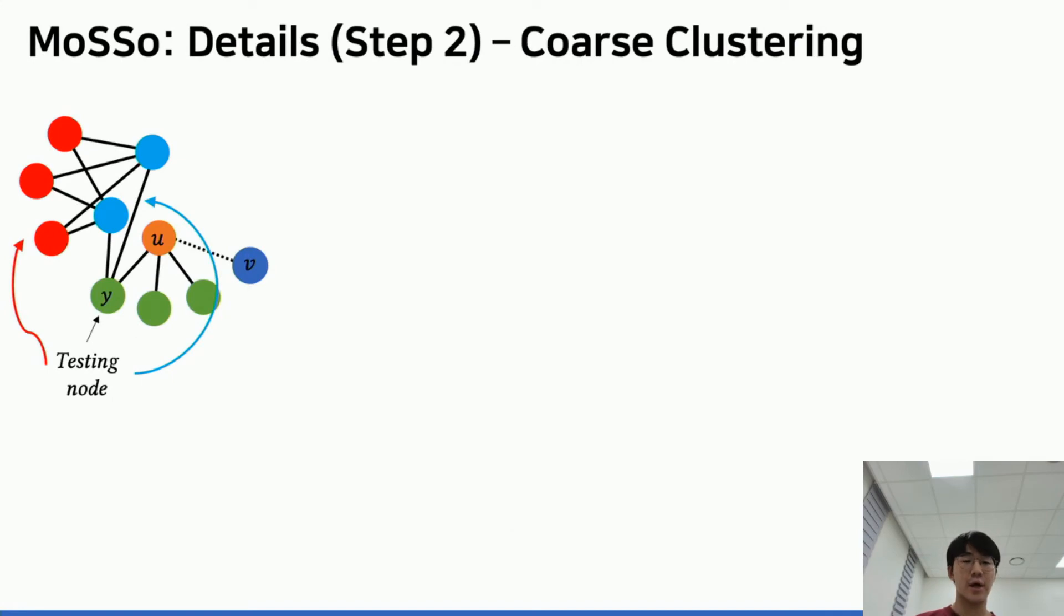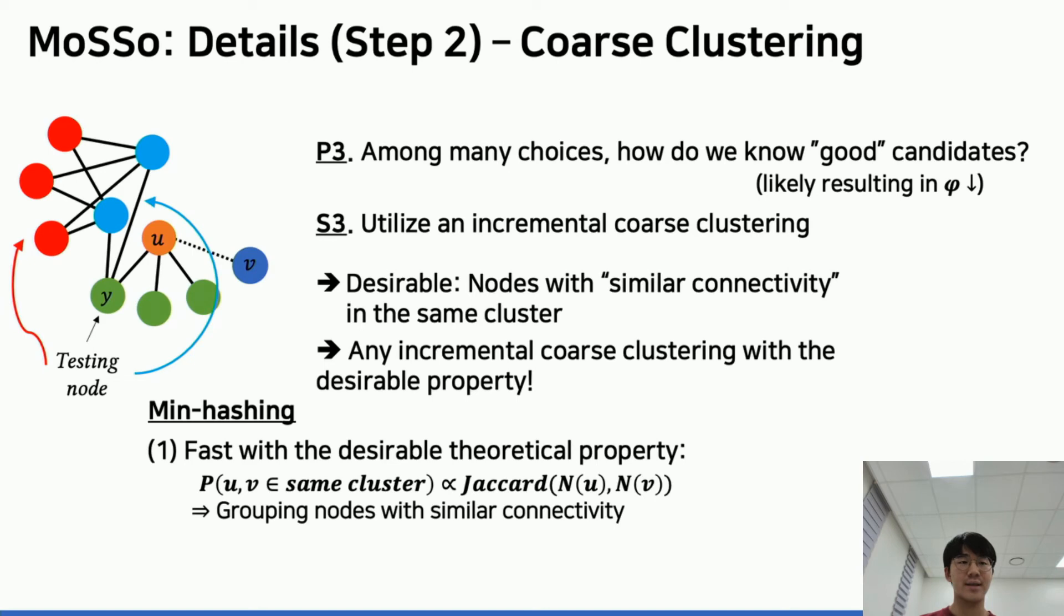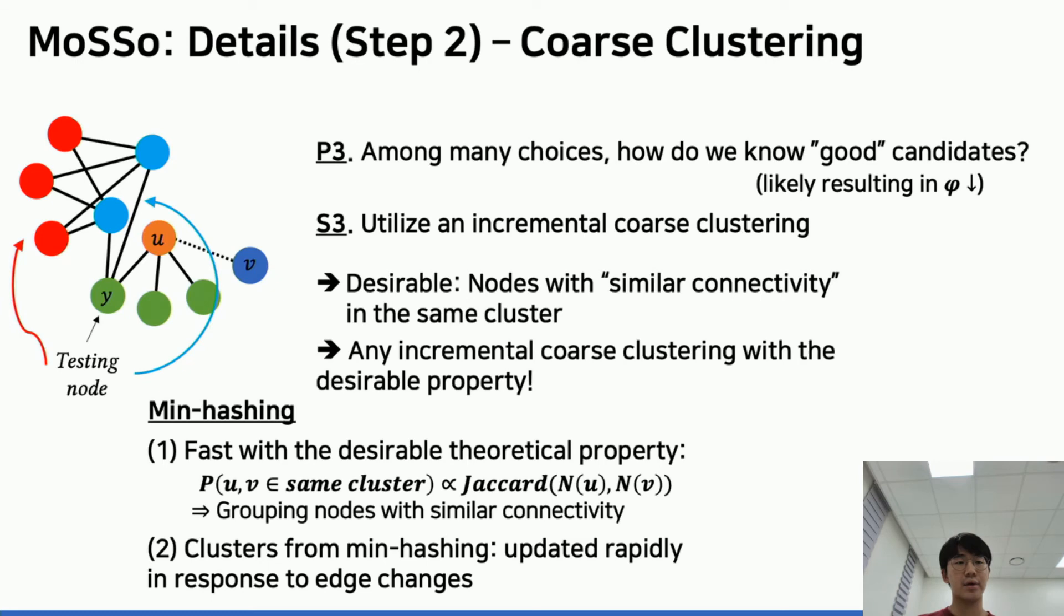Once a testing node is given, we should propose a good candidate. Our approach is to leverage incremental coarse clustering. What we want from clustering is nodes with similar connectivity belonging in the same cluster. We especially use the MinHashing algorithm for two reasons. First, it is fast and has theoretically proven desired properties. It is guaranteed that the probability that two nodes are in the same cluster is proportional to Jaccard similarity of the neighborhoods. In addition, clusters by MinHashing can be updated really quick in response to edge changes.